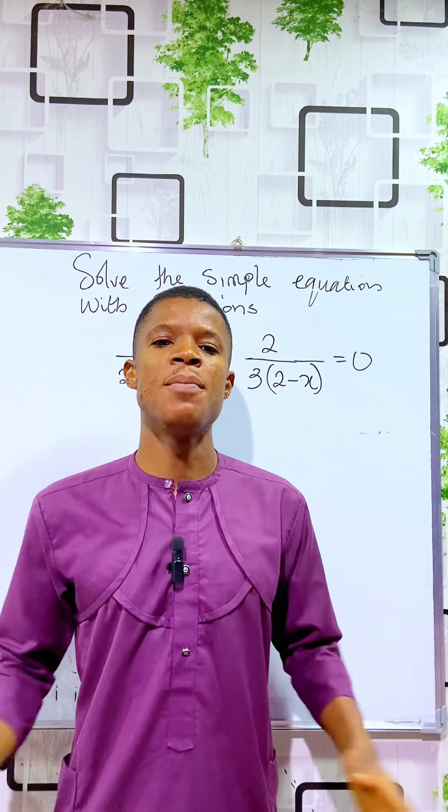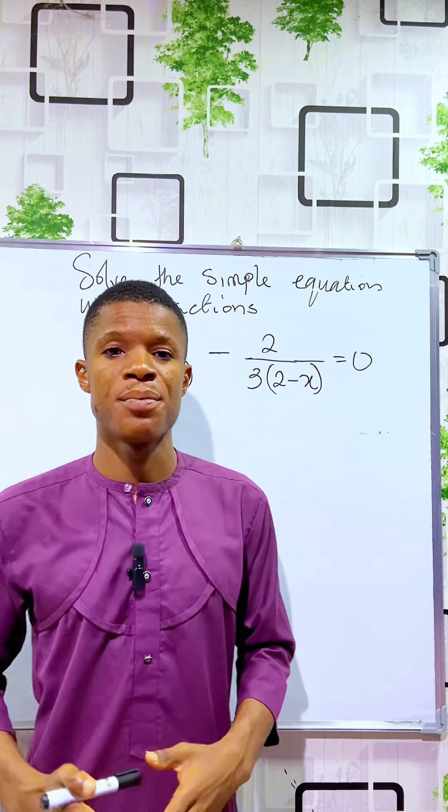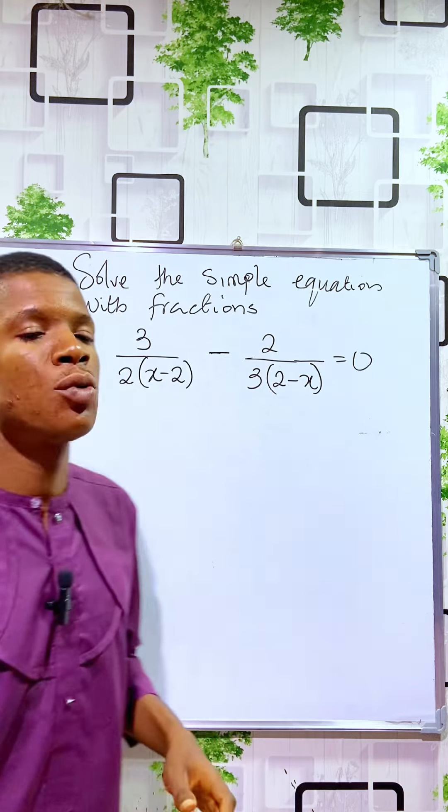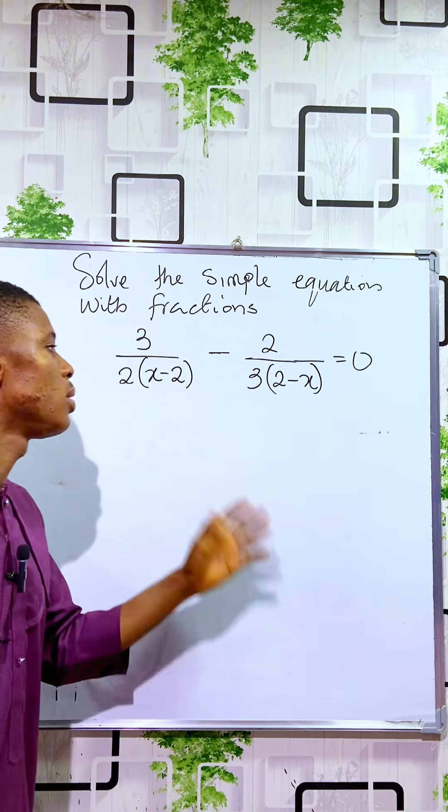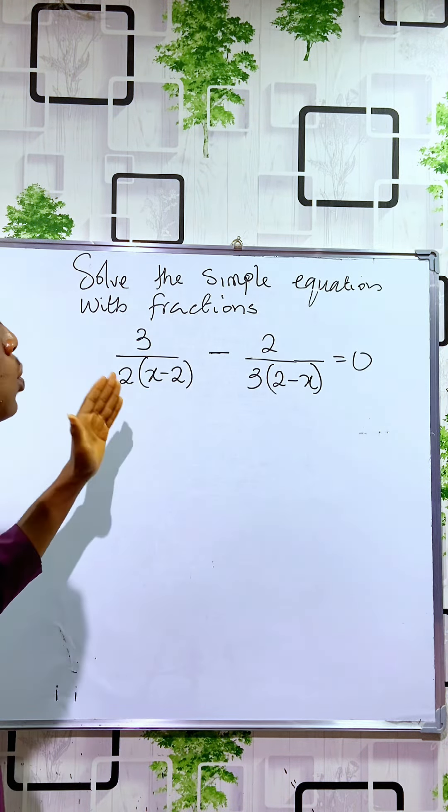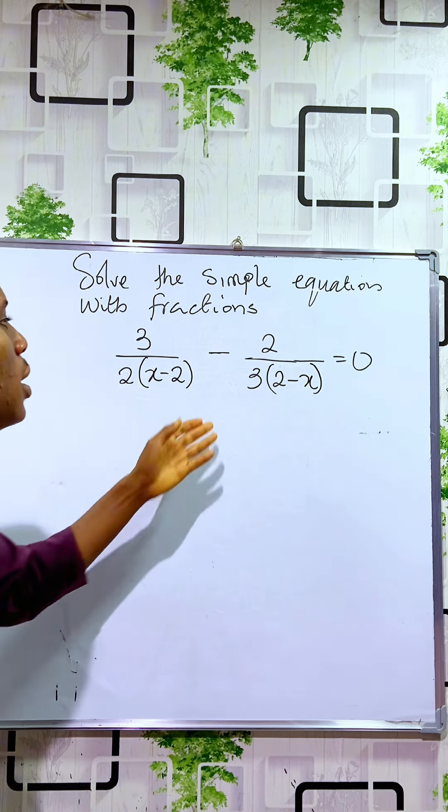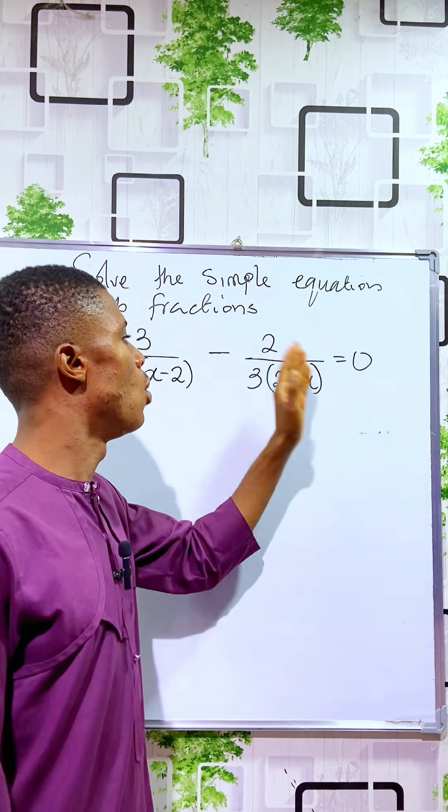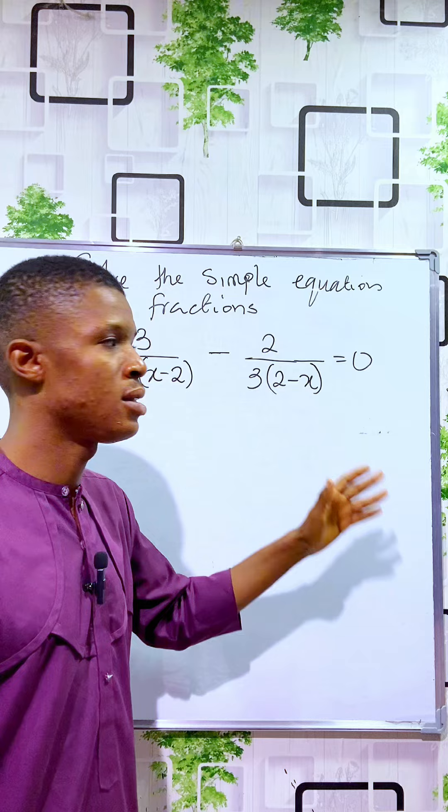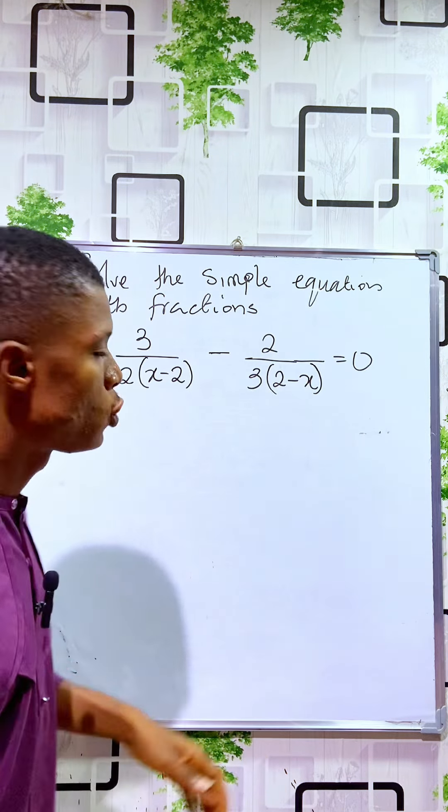Guys, welcome. Simple equations made easy. In this video we are told to solve this simple equation: 3 over 2 into x minus 2 minus 2 over 3 into 2 minus x is 0. We are told to find the value of x that will satisfy the equation.